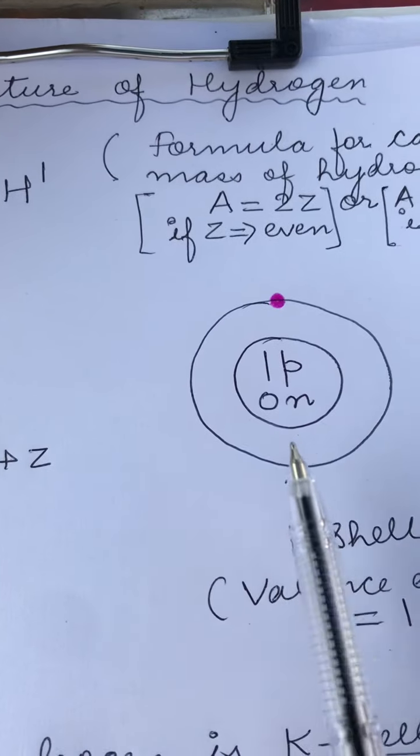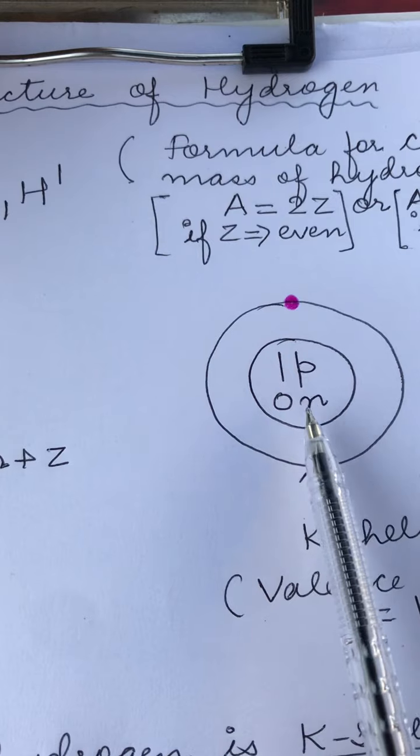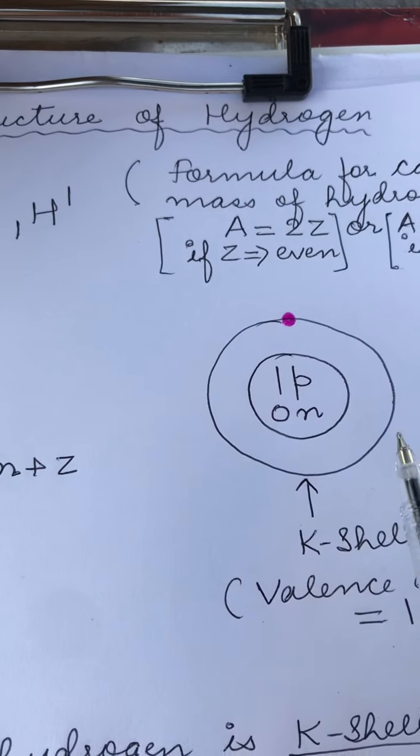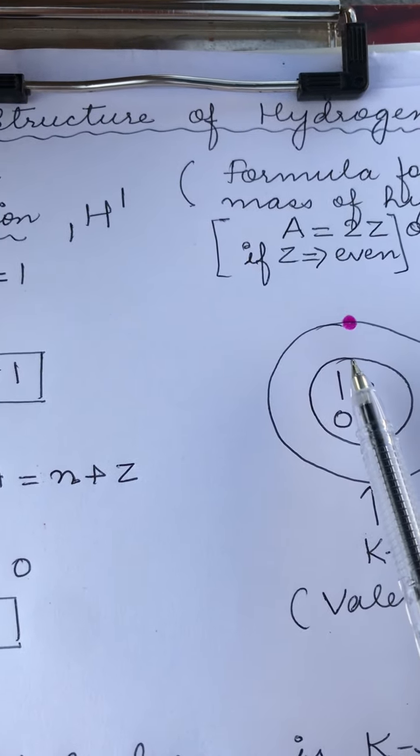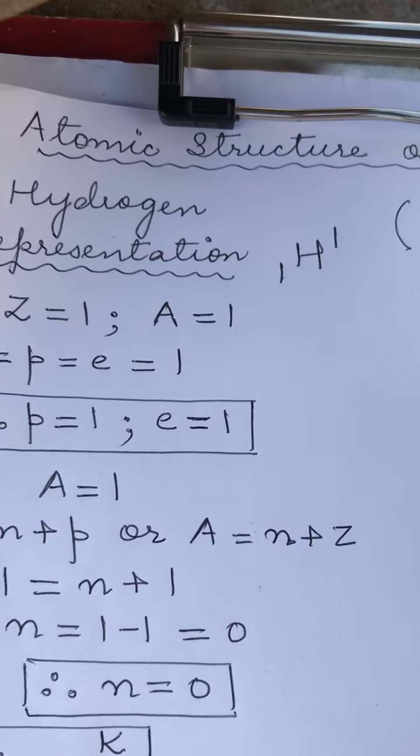As you all know that in any atom, in the center there is a nucleus and it has certain number of protons and neutrons, and around it are shells which have electrons in them. So to know that, we need to first calculate the number of neutrons, protons and electrons in each of them.